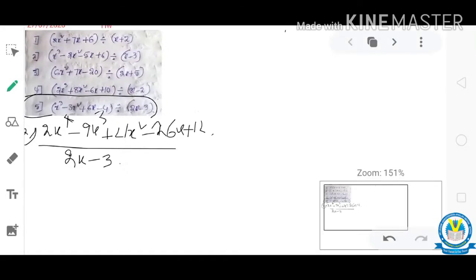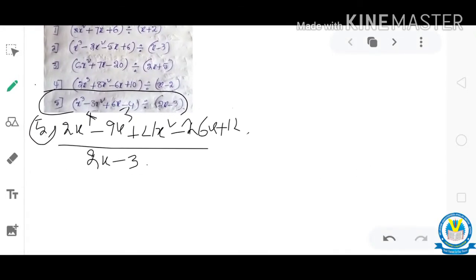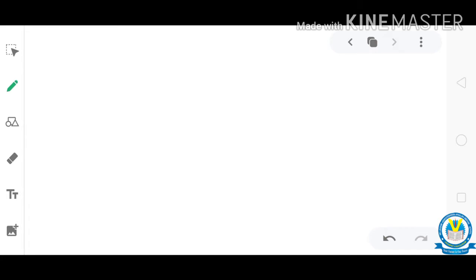Okay students, move me to the fifth one. Here's a printing mistake. So actually the question is 2x power 4 minus 9x cube plus 21x square minus 26x plus 12 divided by 2x minus 3. Okay, sorry. Now we will solve the problem.